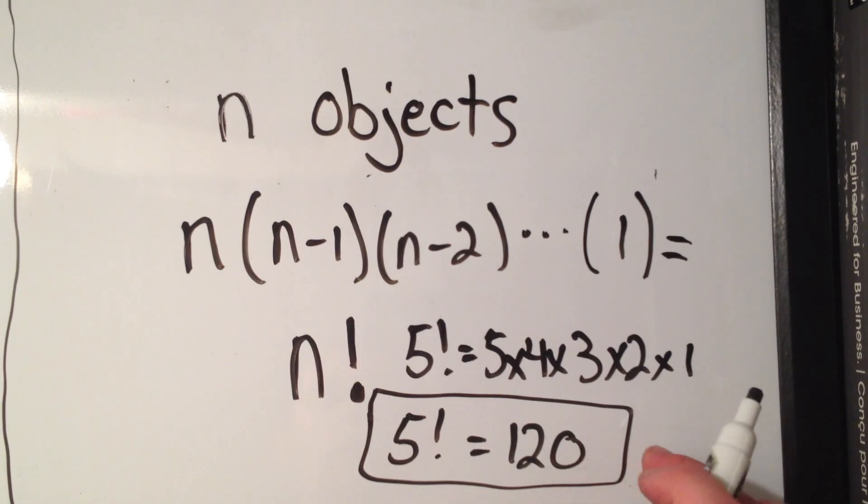Hopefully I'm right about that. So that's the number of ways to arrange n objects. Thanks.